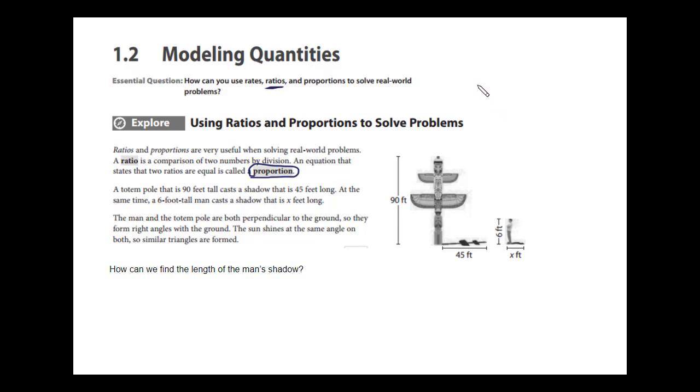I could give you a simple example of two numbers that are in proportion. 2 over 3 is in proportion with 6 over 9. There's a couple of ways we can show this. We could reduce 6 over 9 by dividing by 3, and you would get 2 thirds. But you can also use cross products, where we take the top of one times the bottom of another. We cross multiply and you get 2 times 9 equals 3 times 6. Both of those are 18. So since their cross products are equal, we can say those two fractions are in proportion.